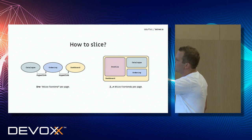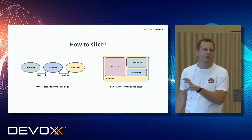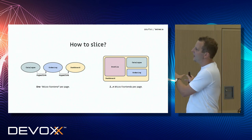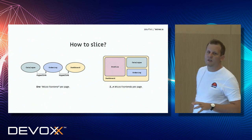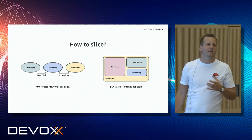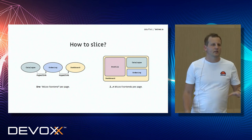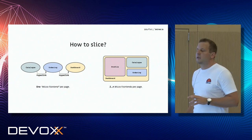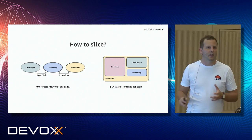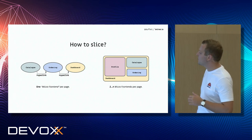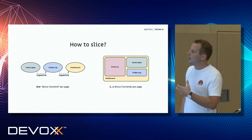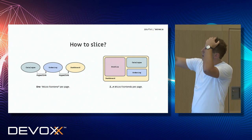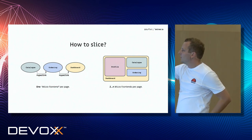Comparing two approaches: on the left-hand side, the micro frontend idea of having one micro frontend per page — which some people call micro frontends. On the right-hand side, plugging multiple micro frontends into a single page. We don't have a common understanding when we talk about micro frontends. The left-hand side I usually call 'smaller applications linked together.' The right-hand side is what I usually mean when I talk about micro frontends.